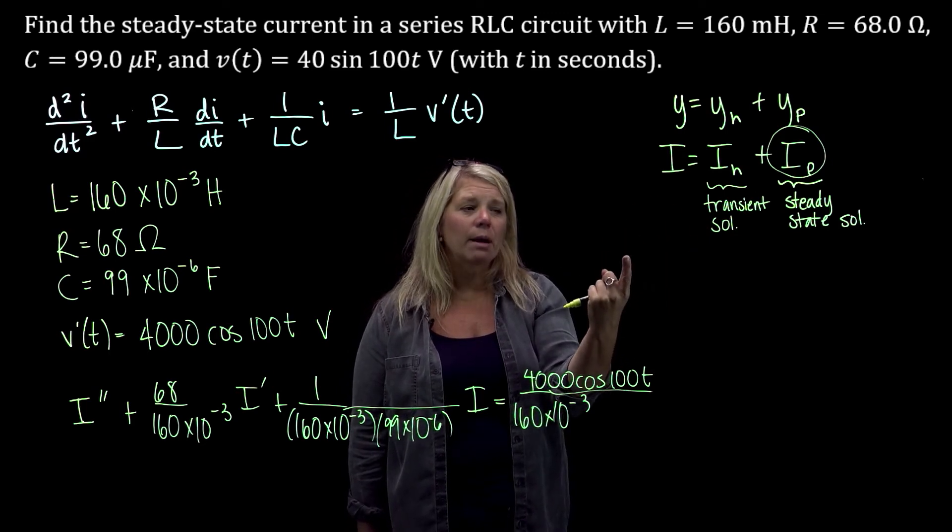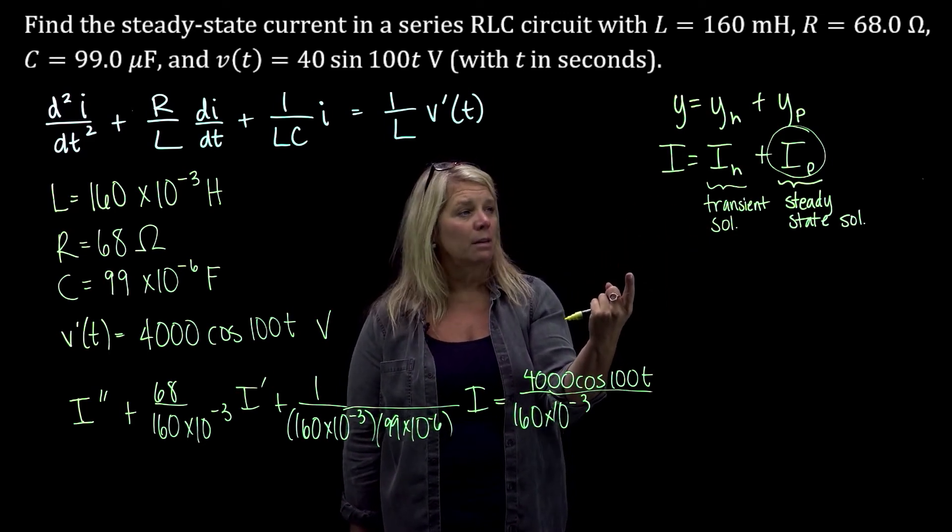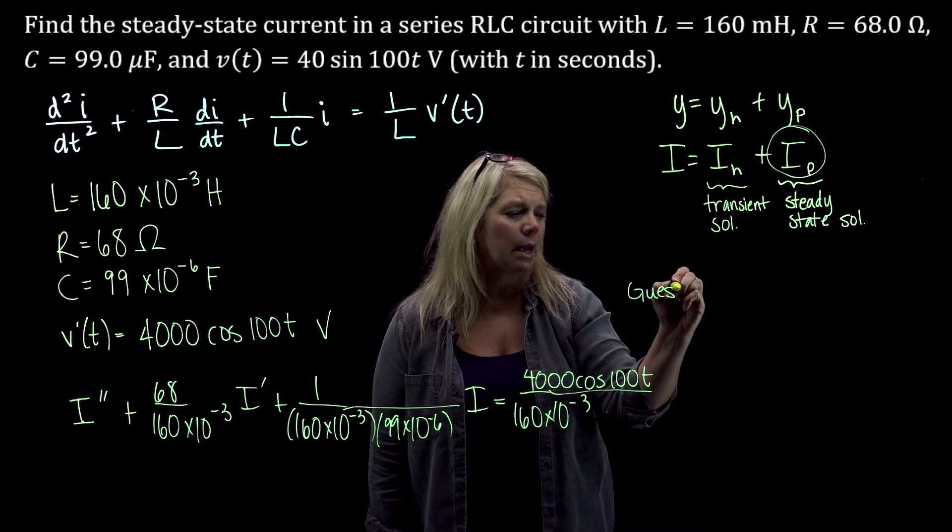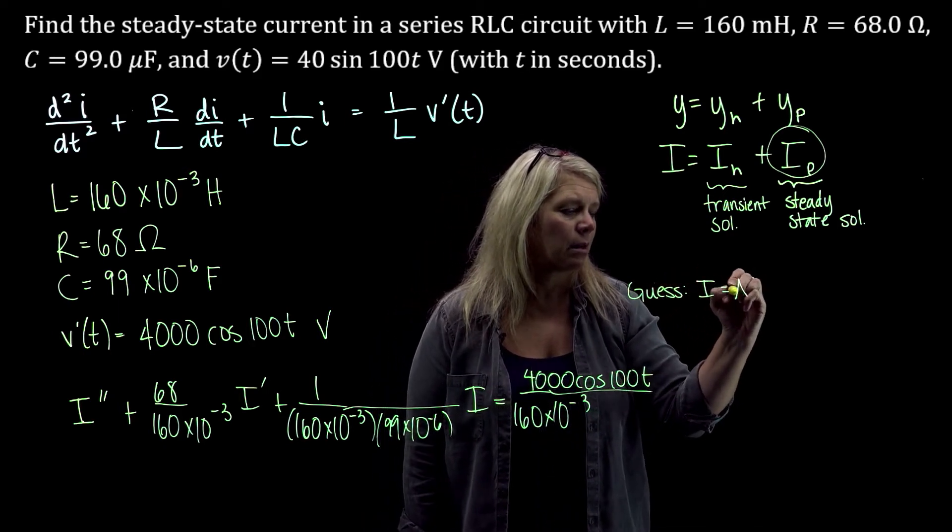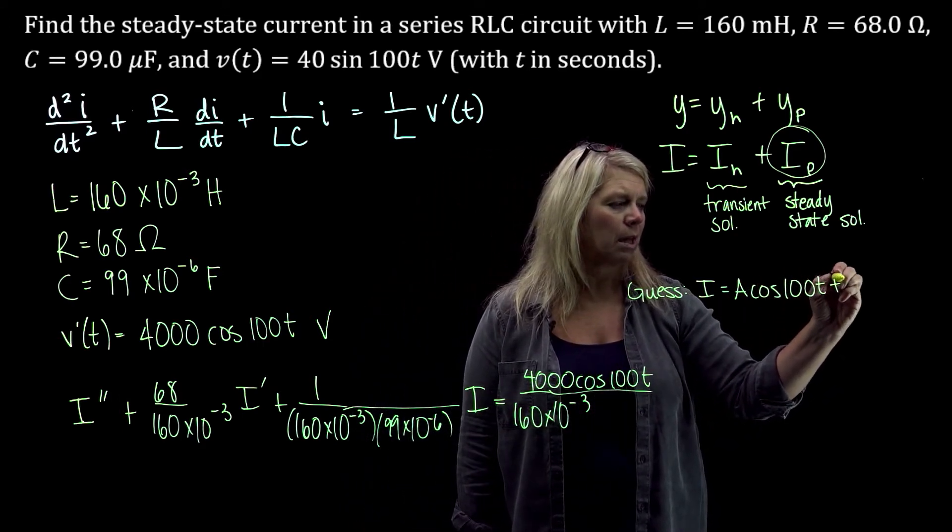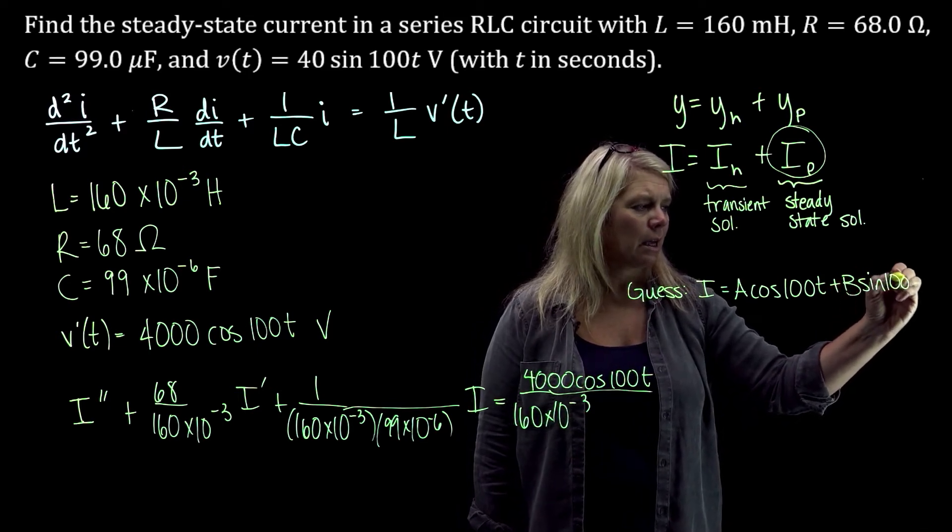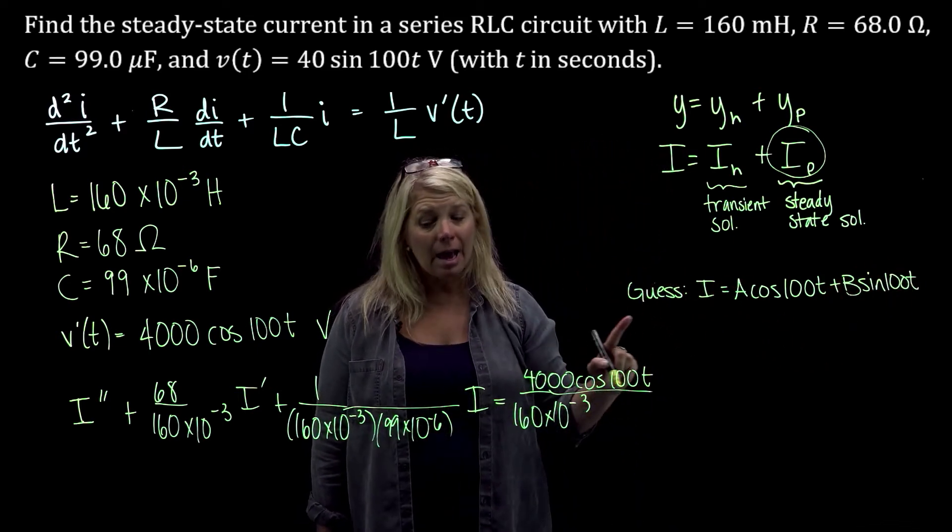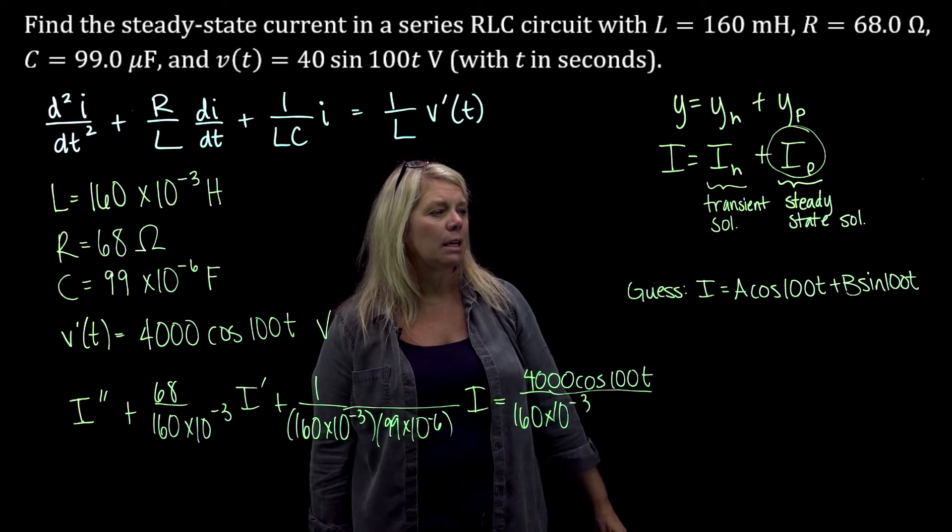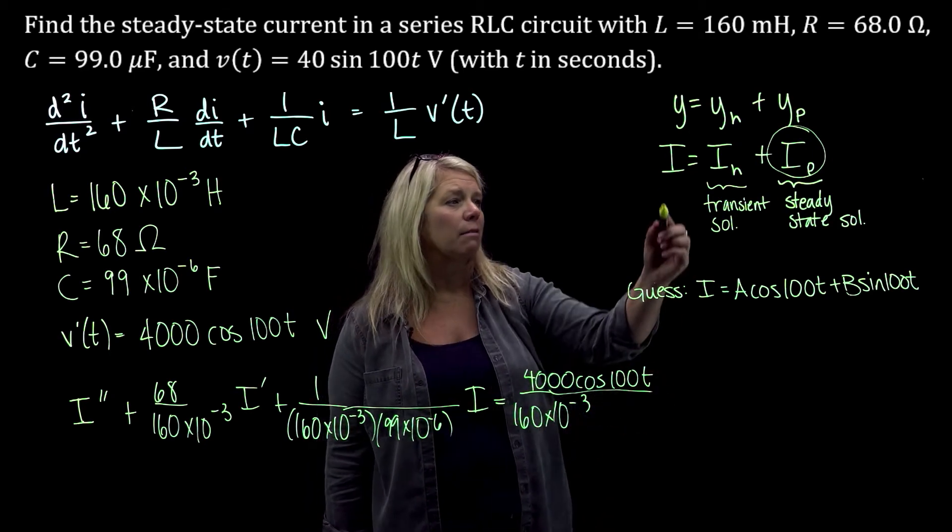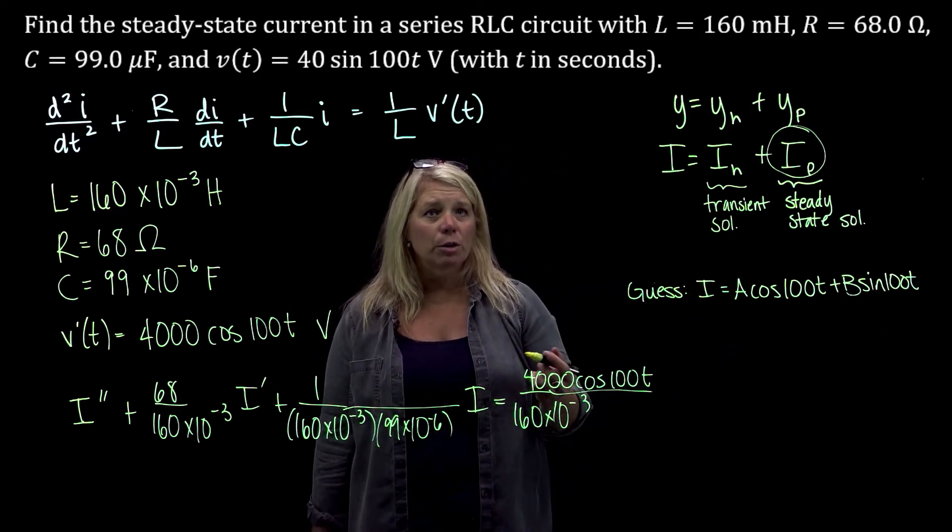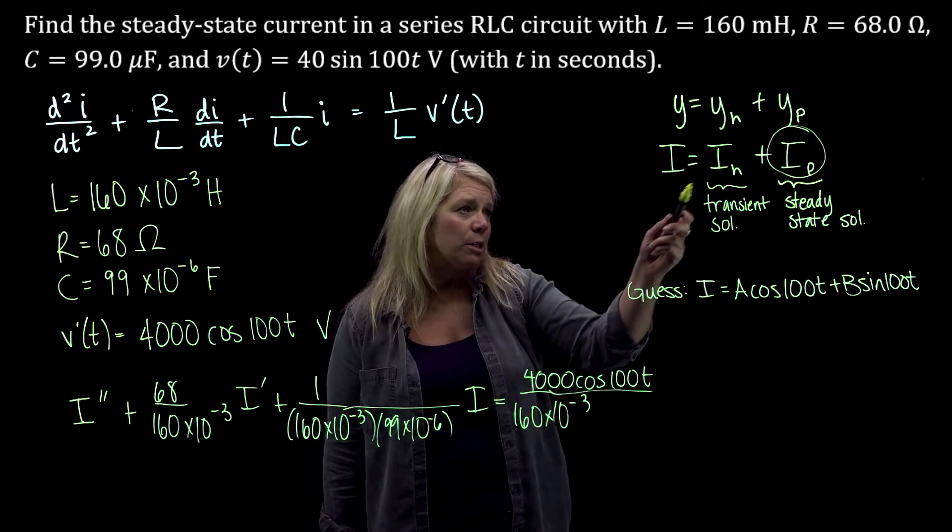I do maybe want to think about the transient solution for a moment because finding that steady periodic solution, I'm going to be making a guess a cosine of 100t plus b sine of 100t and that is a good guess unless my transient solution has the same frequency that also has 100t in the solution. So we should verify that that really is a transient solution. It really dies out. That I don't have these solutions as part of that. So you should make sure that you don't have that situation going on here.